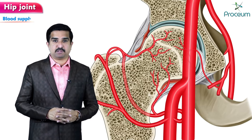Now let us discuss the clinical anatomy of the hip joint, starting with hip dislocation. A hip dislocation is a disruption of the joint between the femur and the pelvis — specifically when the ball-shaped head of the femur comes out of the cup-shaped acetabulum of the pelvis. Symptoms typically include pain and inability to move the hip. Complications may include avascular necrosis of the hip, injury to the sciatic or femoral nerve, or arthritis.